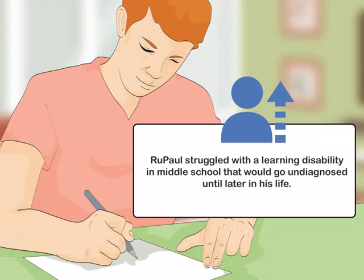Mention details about the person's upbringing. Discuss any details from their upbringing that reflect on their later life. Make sure you mention key moments in their family or social circle that seem to impact their childhood and how they developed as a young person. For example, you may write about the person's experience with abuse at the hands of a parent, or mention that the person struggled with a learning disability in middle school that would go undiagnosed until later in their life.